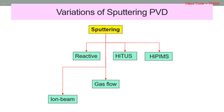We will focus on variations of sputtering PVD. As mentioned earlier, sputtering PVD consists of ion beam sputtering, reactive sputtering, gas flow sputtering, high power impulse magnetron sputtering (HiPIMS), and high target utilization sputtering (HiTUS).